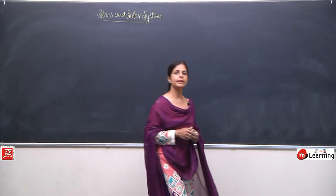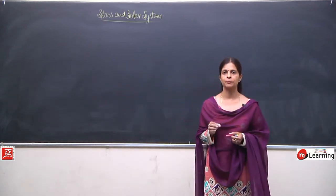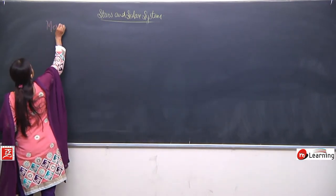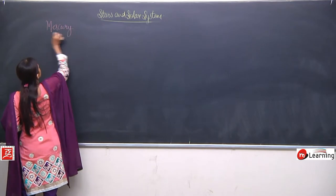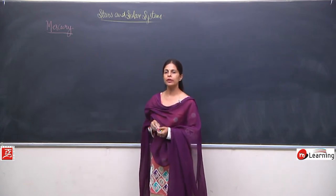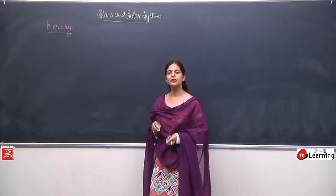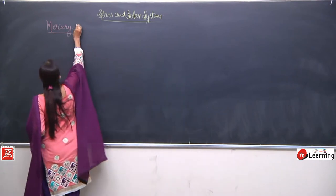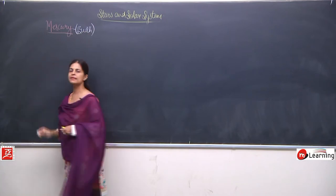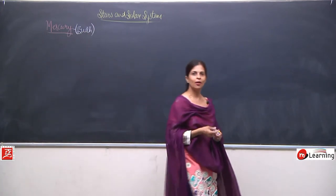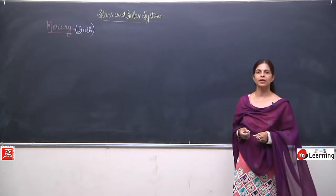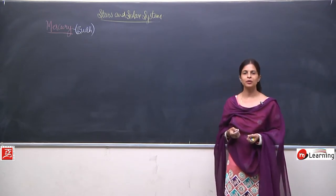We will talk first of all about the first planet, which is Mercury. In Hindi, Mercury is known as Buddha. Planets like Buddha, Shukra, and Shani all play a very important role in the field of astrology, so for astrologers all these are very very important.